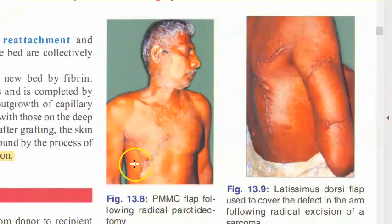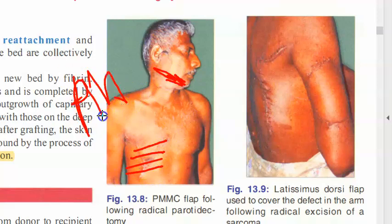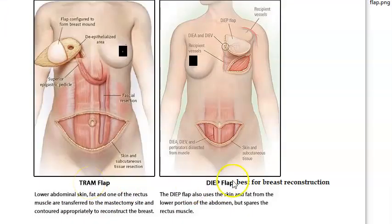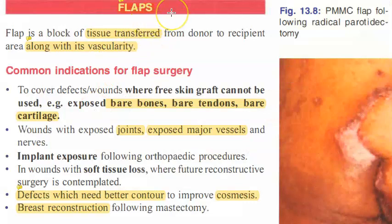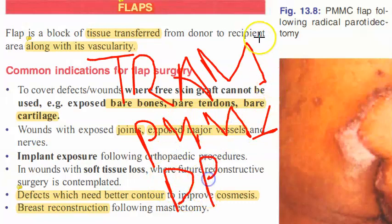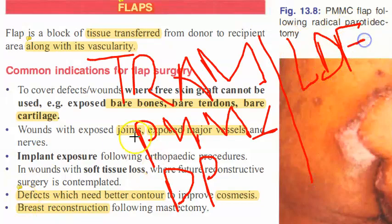For PMMC, the fifth or sixth rib can be used for mandibular reconstruction — the thoracoacromial artery is the pedicle of this flap. TRAM — transverse abdominis myocutaneous flap — is also pedicled and used for breast reconstruction; though it is widely used, the best option is actually DIEP — deep inferior epigastric perforators. So the key pedicled flaps are delta pectoral, PMMC, and TRAM; in free flaps, the latissimus dorsi flap is a primary example.